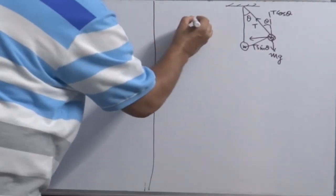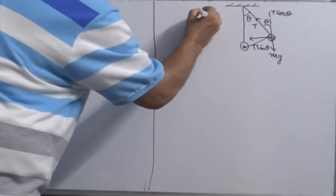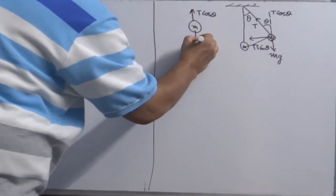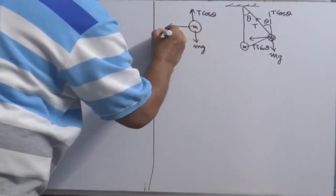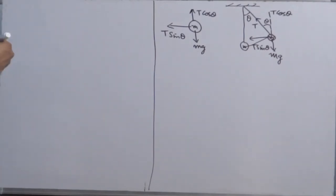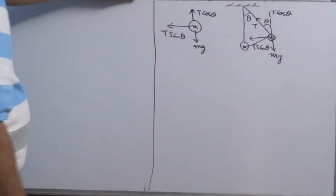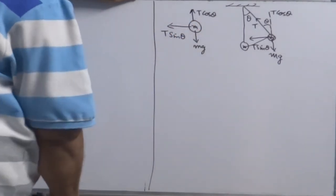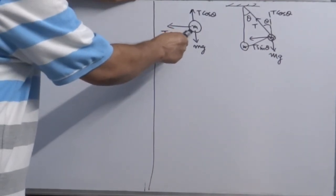So how many forces are acting? Now T cos theta and mg down, T sine theta towards left. Now this sets up an object or bob of the simple pendulum in unstable equilibrium. Because even if T cos theta is equal to mg, then this bob, the moment you release, will be moving in the direction of T sine theta.